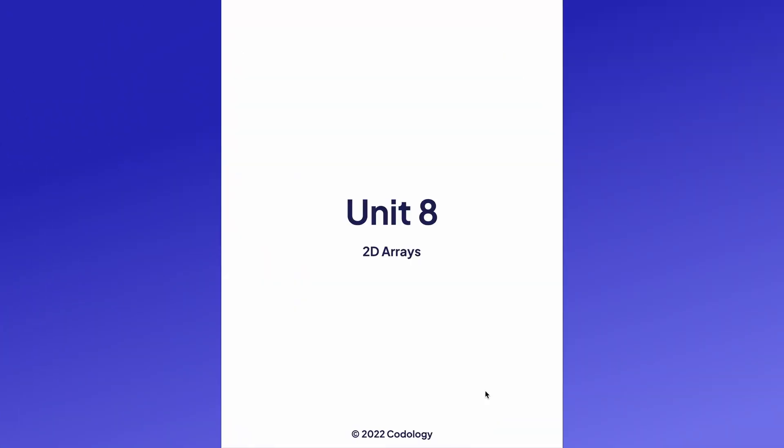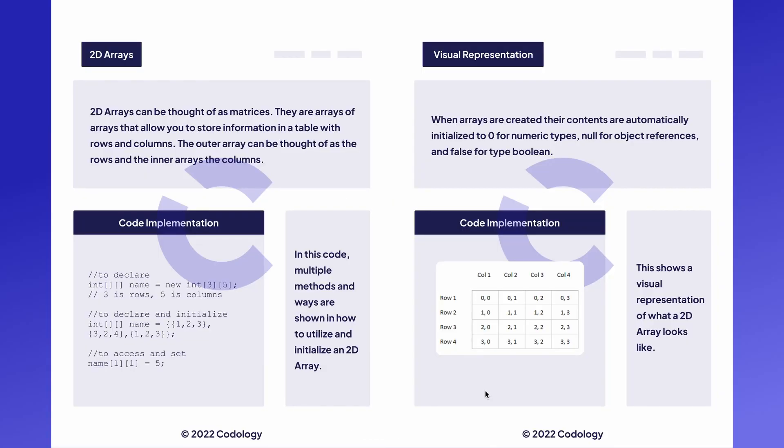My name is Katia and in this video we're going to be going over unit 8 of the AP Computer Science A curriculum and looking through 2D arrays in Java. 2D arrays can be thought of as matrices — they're arrays of arrays that allow you to store information in a table with rows and columns. The outer arrays can be thought of as the rows and the inner arrays can be thought of as the columns.